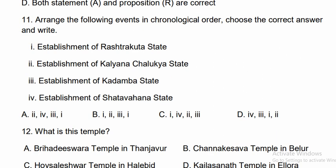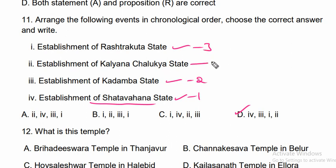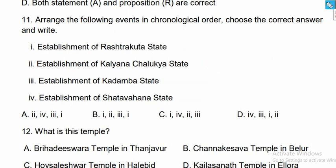Question eleven: Arrange the following events in chronological order. Option D is the correct answer. The order is: first, establishment of the Shatavahanas; second, establishment of the Kadamba state; third, establishment of the Rashtrakutas; and fourth, establishment of the Kalyana Chalukyas.